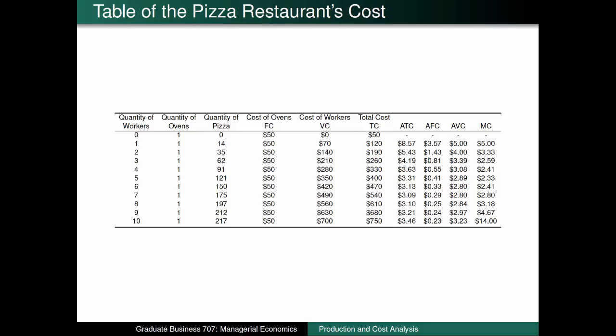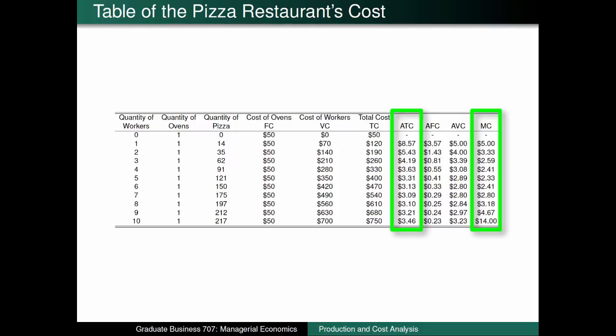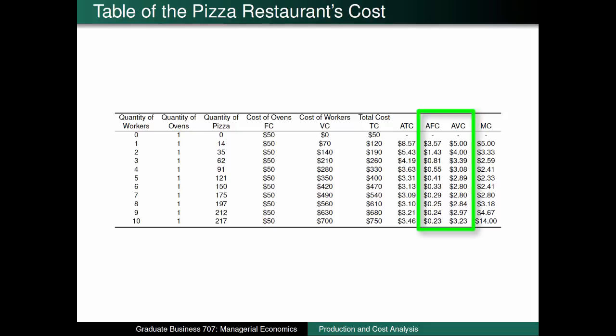This table extends the calculations that we have been introducing so far. Recall that we started the first recording by discussing the production function, which is a relationship between labor, capital, and output. We started this recording by calculating fixed cost, variable cost, and total cost, before getting into the two most important cost concepts: marginal cost and average total cost. Now we can see the calculations for both average fixed cost and average variable cost. Notice that just like with average total cost and marginal cost, average variable cost initially declines before increasing when additional pizzas are produced.